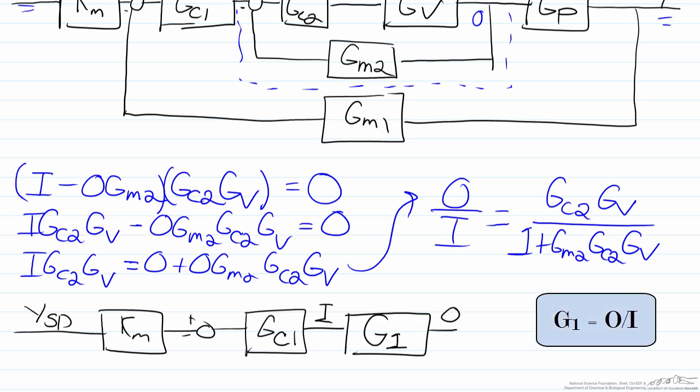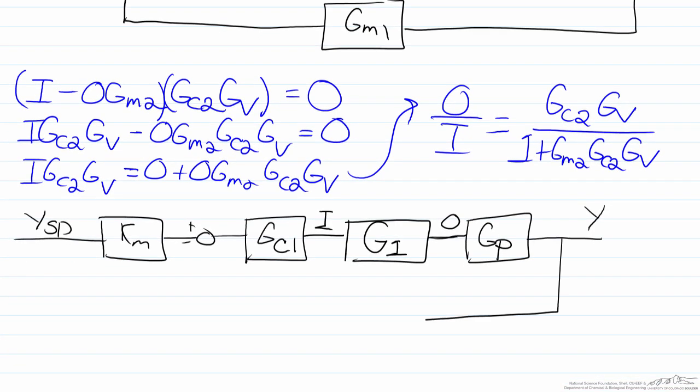Here we will just call this G1 for now just to make our lives easier when we are doing some math with the block diagram algebra. Then we will have Gp which goes to y, and then this will go to Gm1.